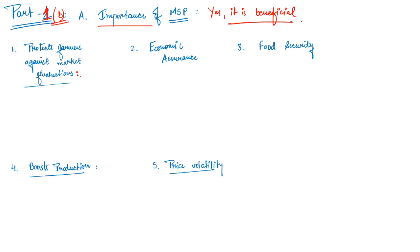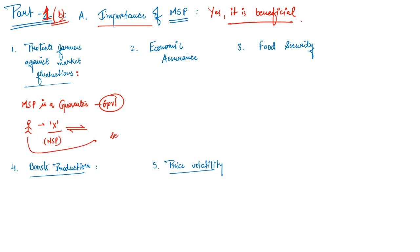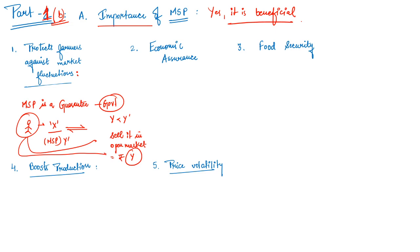Looking at the importance of MSP — first, it protects farmers from market fluctuations. MSP is a guarantee given by the government. Suppose a farmer cultivating crop X finds that the open market price Y is less than the MSP (Y dash). The farmer will then sell to the government at Y dash, which is greater than Y. This assures the farmer a minimum amount regardless of market fluctuations.